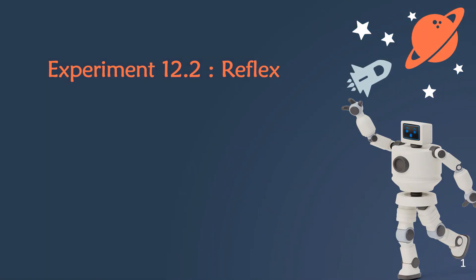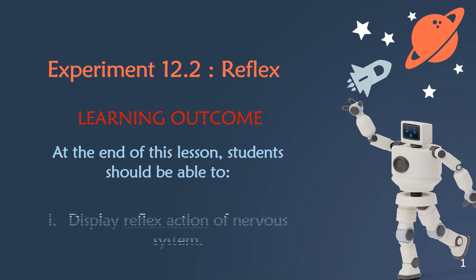Experiment 12.2, Reflex. The learning outcome for this experiment is: at the end of this lesson, students should be able to display reflex action of the nervous system.